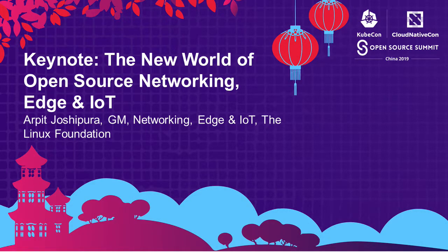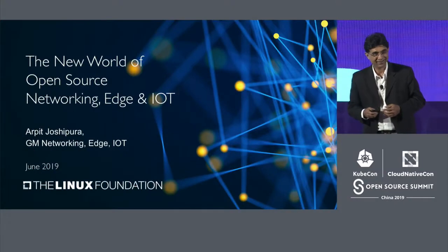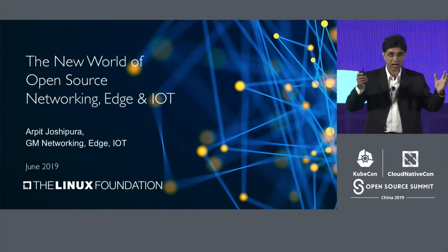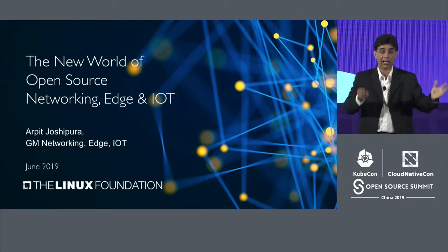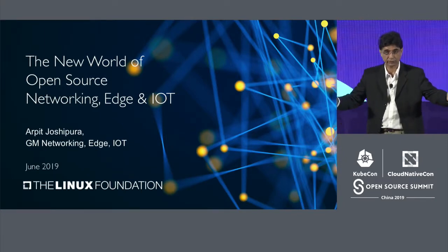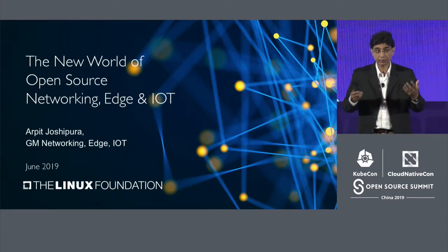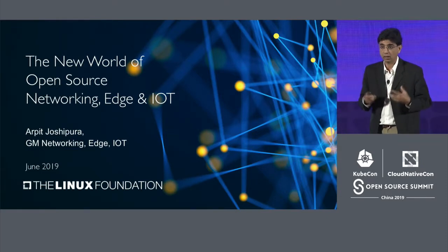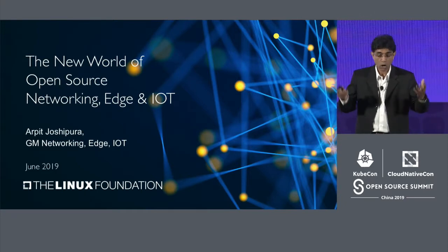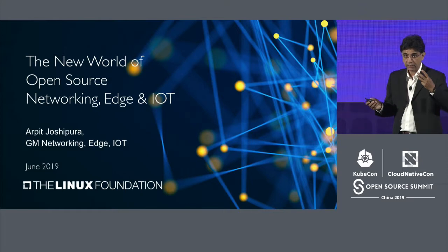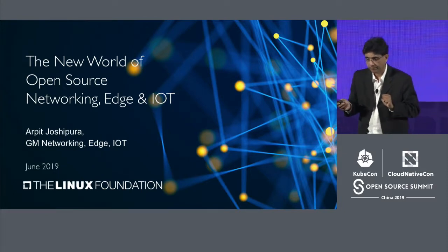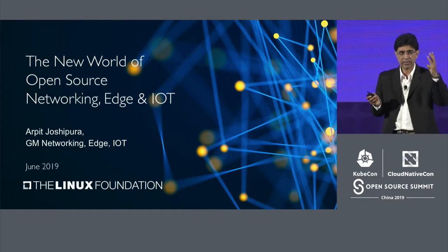Good morning. As people come in, we will start this second round of keynotes with a very interesting twist: how does cloud native impact adjacent areas and technology. That's the focus of this whole section of keynotes. What I'm going to talk about today are three things — I call it the new world of open source networking, edge, and IoT — and this new world has three characteristics.